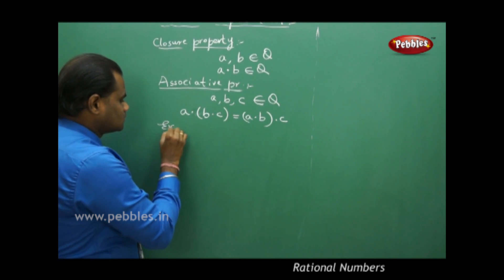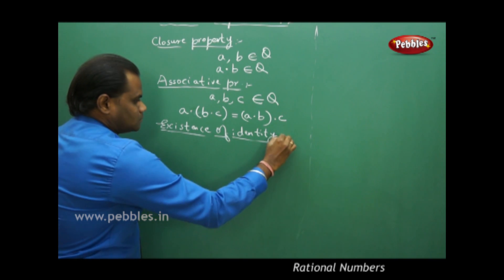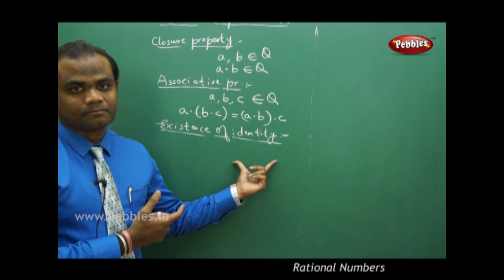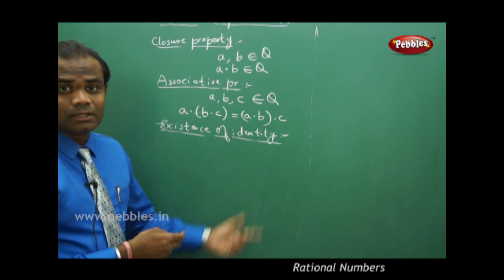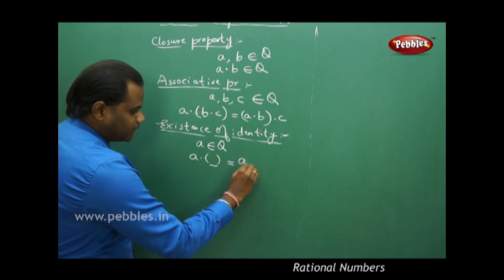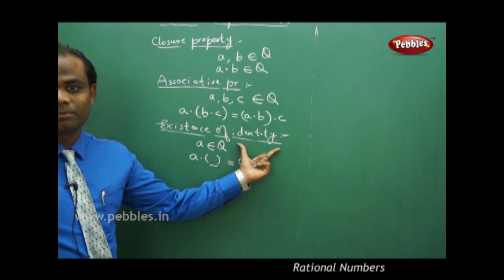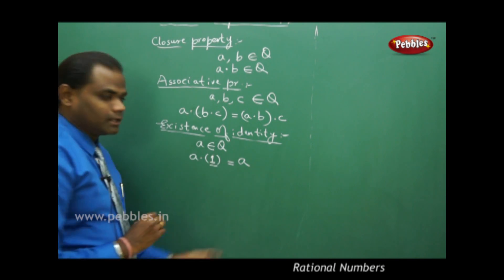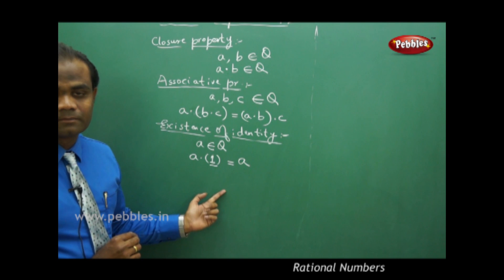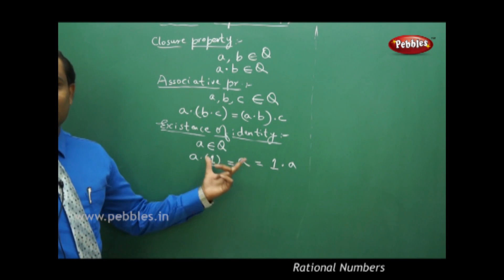The third property is the existence of identity. Identity is a very important property, and the same identity under multiplication is equally important. When we understand the multiplicative identity, if I take an element A belonging to Q, then whatever I multiply must give back A. As we know, A multiplied with 1 gives A. Therefore, 1 is the multiplicative identity under multiplication — 1×A = A. This is how the existence of identity is understood under multiplication in Q.